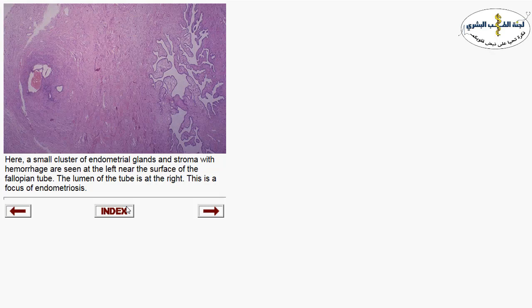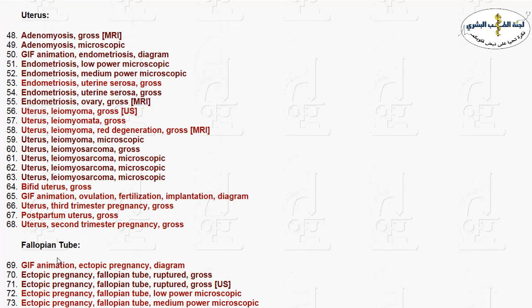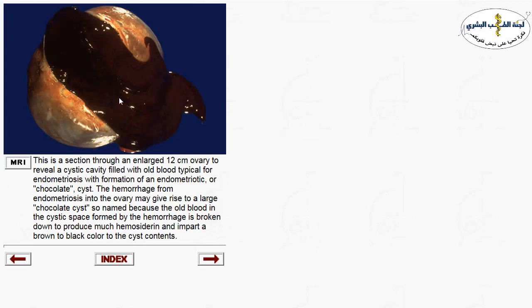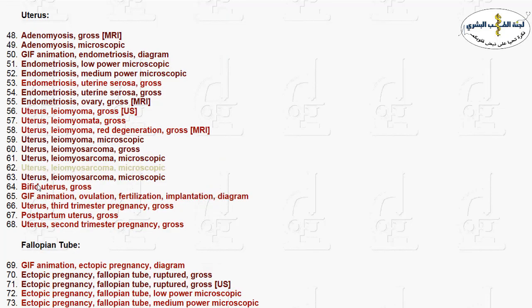Sometimes endometriosis within the ovary can bleed and form a chocolate cyst-like structure — a cystic formation filled with blood. This appears as an ovarian cyst filled with brownish, chocolate-like material representing endometriotic cysts within the ovary. Two out of three features must be found to diagnose endometriosis: endometrial glands, stroma, or hemosiderin-laden macrophages.